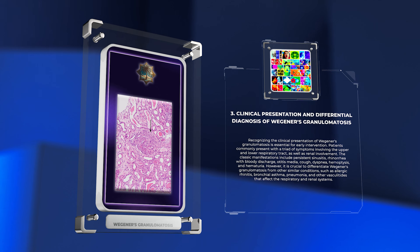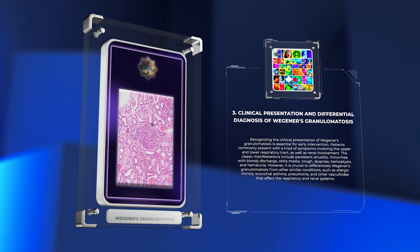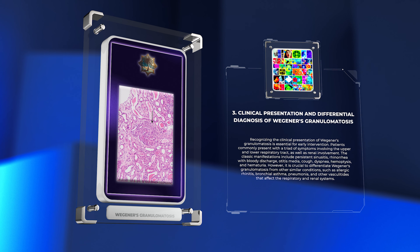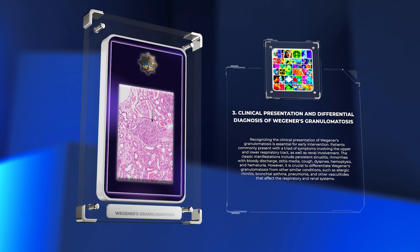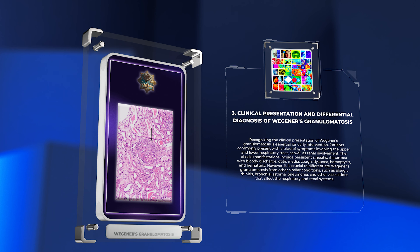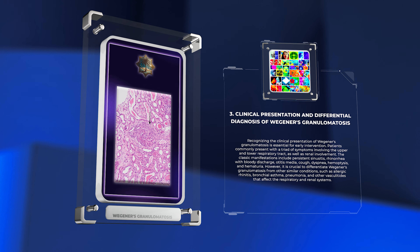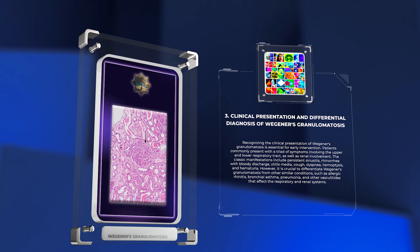However, it is crucial to differentiate Wegner's granulomatosis from other similar conditions, such as allergic rhinitis, bronchial asthma, pneumonia, and other vasculitides that affect the respiratory and renal systems.